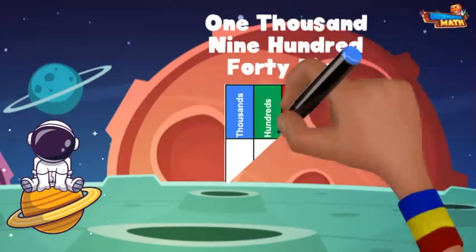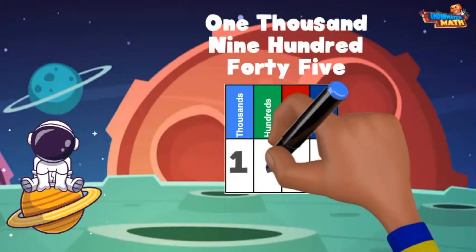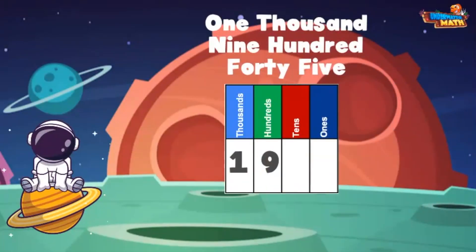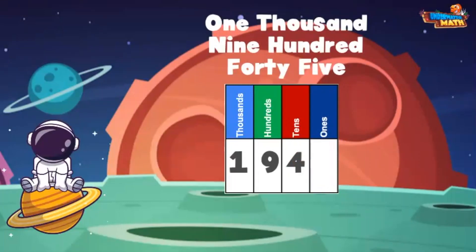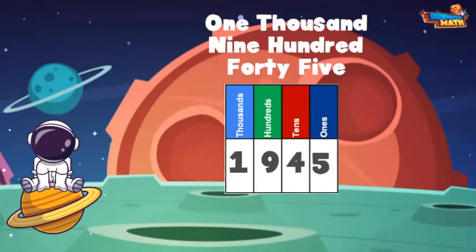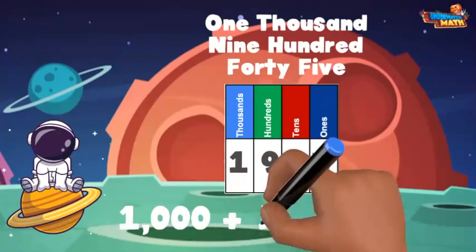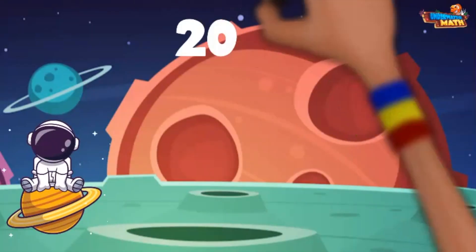Let's go a little higher. Check out the number 1,945. The 1 represents 1,000, the 9 represents 900, the 4 represents 40, and the 5 represents 5. We have 1,000 + 900 + 40 + 5.